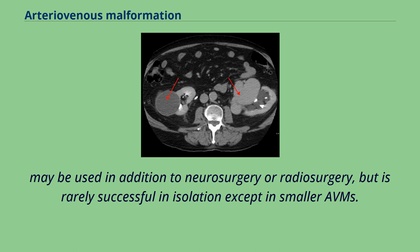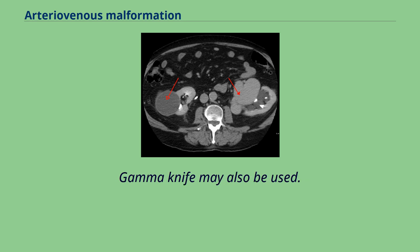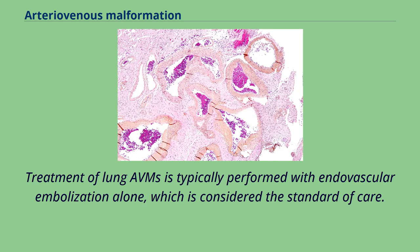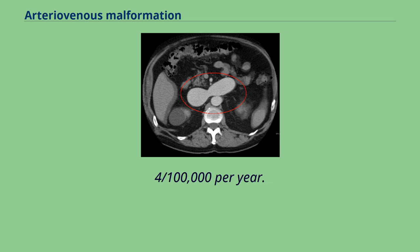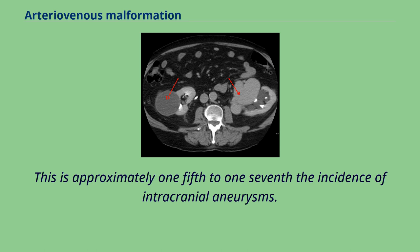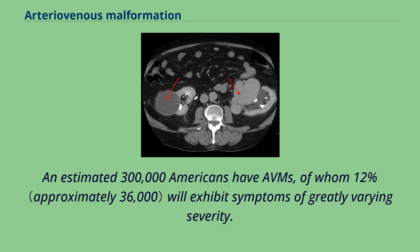Gamma knife may also be used. Treatment of lung AVMs is typically performed with endovascular embolization alone, which is considered the standard of care. The estimated detection rate of AVM in the U.S. general population is 1.4 per 100,000 per year. This is approximately one-fifth to one-seventh the incidence of intracranial aneurysms. An estimated 300,000 Americans have AVMs, of whom 12% will exhibit symptoms of greatly varying severity.